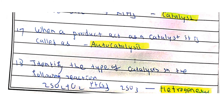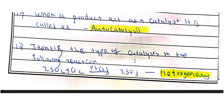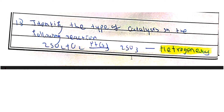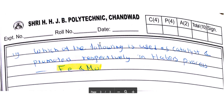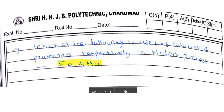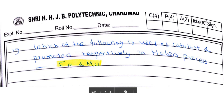When a product acts as a catalyst, it is known as auto-catalysis. In a reaction where reactants are in the gaseous phase and the catalyst is in the solid phase, it is heterogeneous catalysis. In Haber's process, iron is used as the catalyst and molybdenum is used as the promoter.